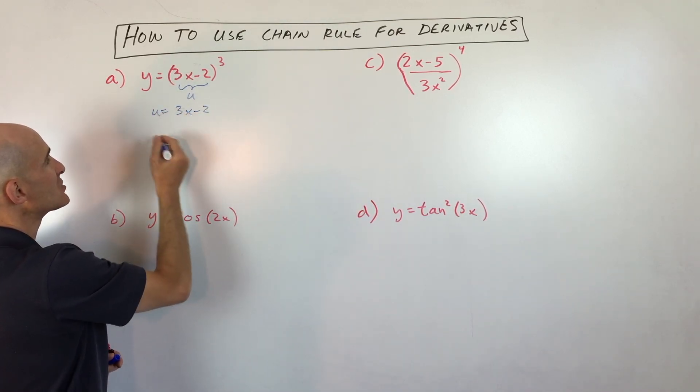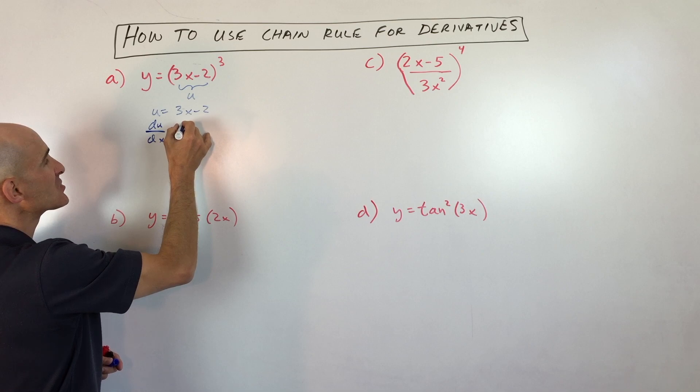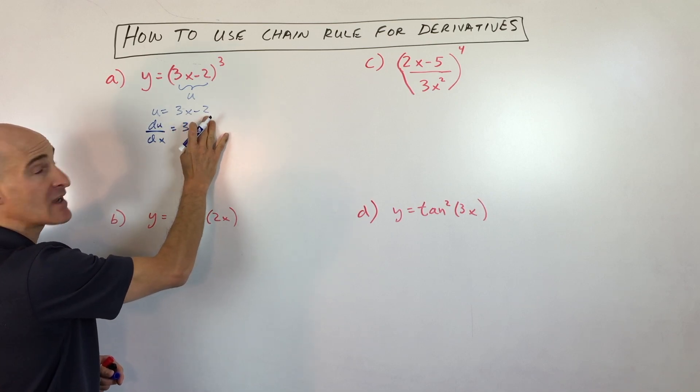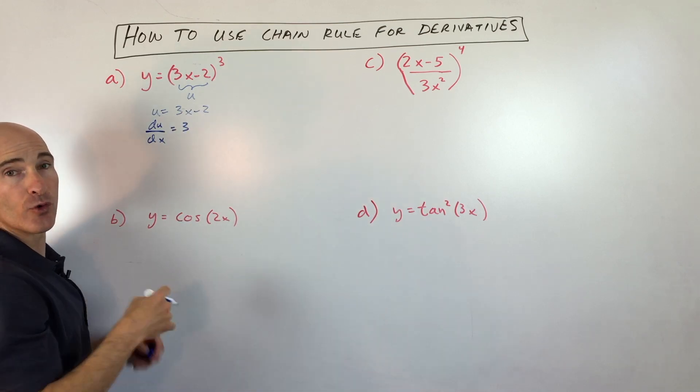I'm going to take the derivative of u with respect to x, du/dx, and that's just going to equal 3 because the derivative of negative 2 is 0 and the derivative of 3x, using the power rule, is just 3.